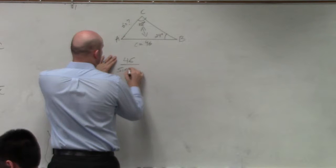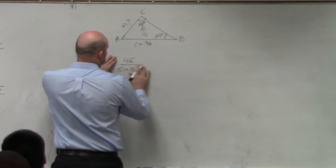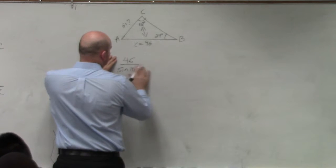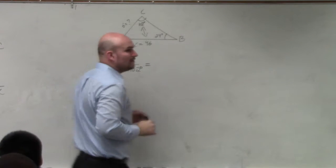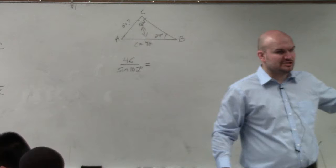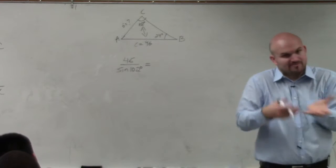So I know I have 46 over the sine of 102 degrees. What the heck am I doing? Now I need to set this to another ratio. Right?